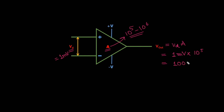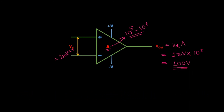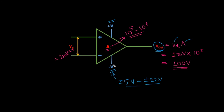Is it possible to get 100 volts from an op-amp? The output voltage depends not only on the differential voltage and gain, but also on the two bias voltages. These bias voltages typically range from ±5V to ±22V, and the output of the op-amp cannot exceed the bias voltage limit. So 100 volts is not possible. The maximum output is determined by the DC bias voltages supplied to the op-amp.